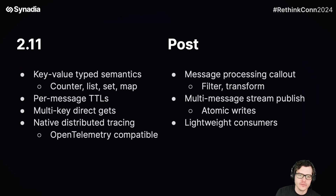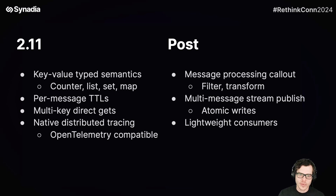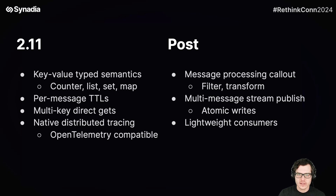The next upcoming release is going to be focused on a number of things, many of which improve the KV capabilities, such as value type semantics — which includes not just having the ability to set opaque bytes in your key-value store, but being able to actually model counters, lists, sets, and maps, and having native operations to support those value types. This has been a common request from people transitioning to NATS KV natively, who are typically coming from Redis, which is an incredibly popular project. Even though Redis has a whole ton of different data structures, these are the four common ones that people actually use in practice.